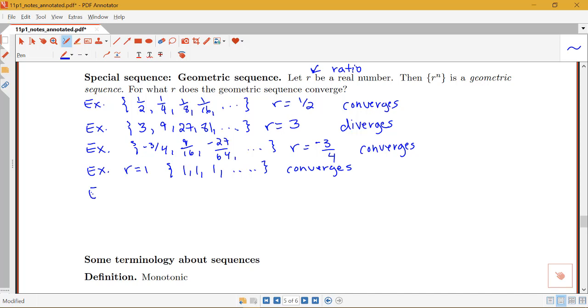If I have r equals negative one, so negative one to the n is my nth term, then I'm going to have the sequence that alternates between negative one and one. That's going to be a sequence that diverges because it's going to keep jumping back and forth between negative one and one.